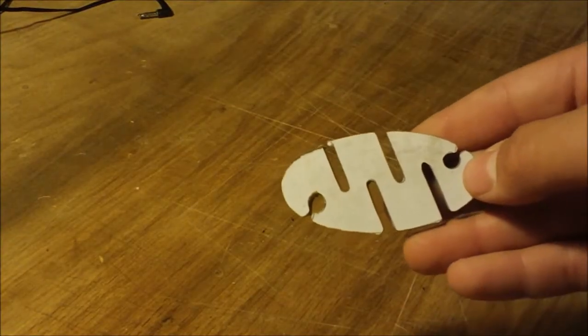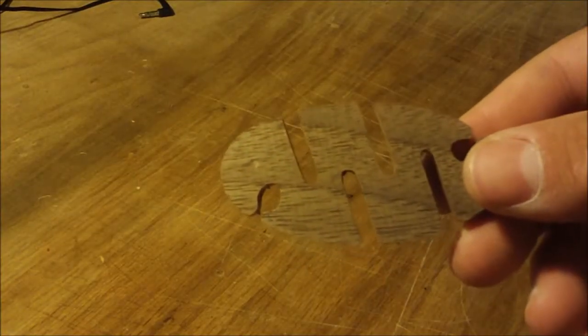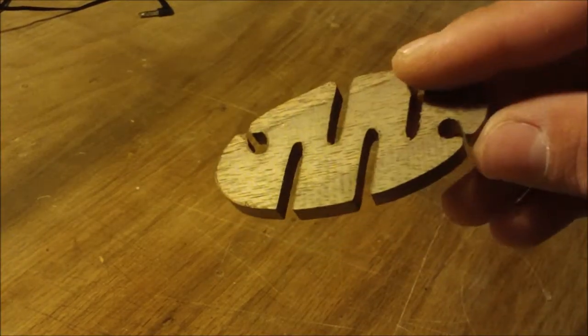All right, we're back here off the scroll saw and we can go ahead and peel up the pattern. Got the pattern off there. And now I'm going to do is just give it a little sanding.